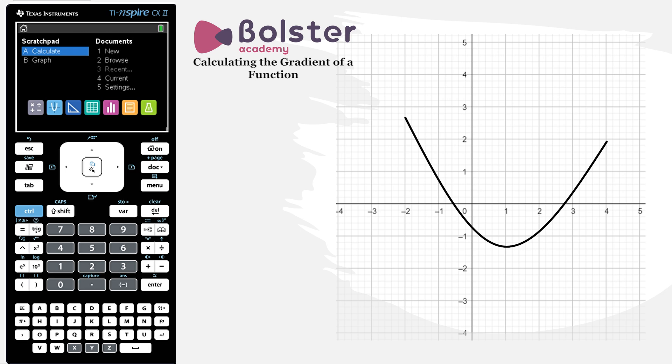When a function is going down, it has a negative gradient. And when a function is going up, it has a positive gradient.